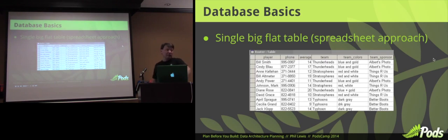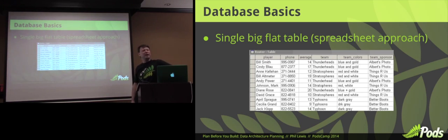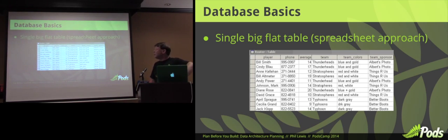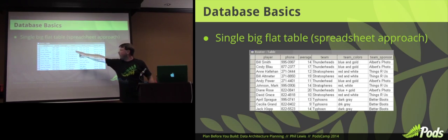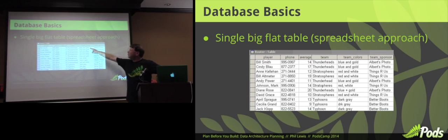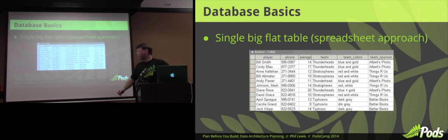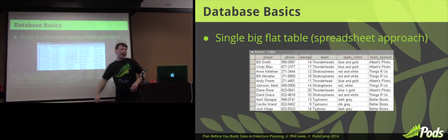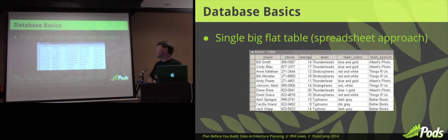A lot of people start off, if they come from a spreadsheet background, they'll create a big, flat, wide table with everything in one table. You run into some issues if you design like this. For example, Bill Smith decides to move teams — it's not necessarily very easy to change that. The team colors decide to change; now you have to go find where all these are. The average score that Bill has had is not something that should be stored in the database directly. That's probably something that should be calculated based on separate score tables.